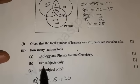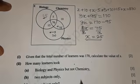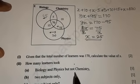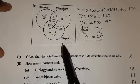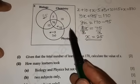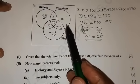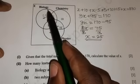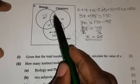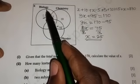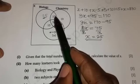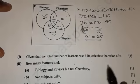How many learners took two subjects only? In other words, they want you to find the number of students that only took two subjects, which means those students that are on the intersection of the two subjects. For example, you have biology and chemistry, so the intersection of biology and chemistry is 5.